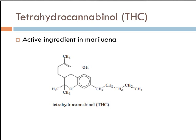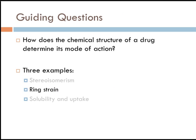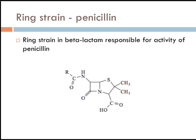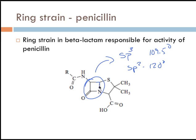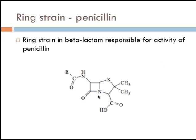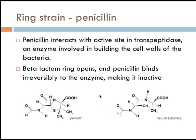Moving on to our next example, we'll talk about ring strain and how the chemical structure of a drug determines its mode of action. The beta-lactam is a four-membered ring. Carbon would prefer either SP3 hybridization at 109.5 degrees or SP2 at 120 degrees, but this square ring is at 90 degrees. There is a lot of ring strain, which accounts for the reactivity of penicillin — that ring is unstable and easy to break.